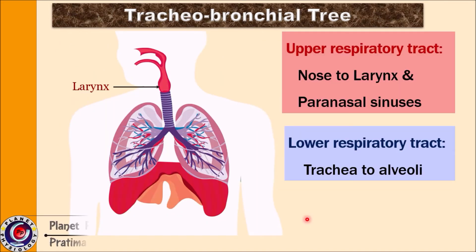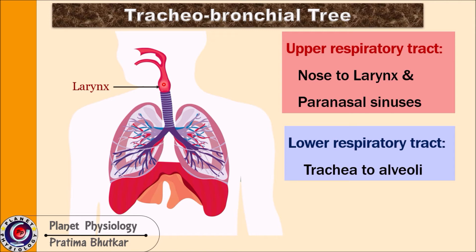The entire respiratory system from nose to alveoli is, for clinical purposes, divided into two parts. From nose to larynx is called the upper respiratory tract, which includes all structures from nose to larynx and also includes the paranasal sinuses forming the nasal cavity. From trachea to the alveoli is called the lower respiratory tract.